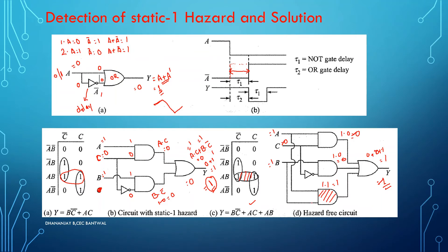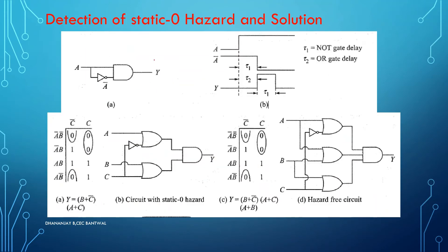Static 0 hazard: your circuit should be giving output 0, but your output is becoming 1. This condition prevails in a circuit of the kind A·A-bar. If you give input 1, this should have been 0. You are expecting output 0. But due to the NOT gate time delay, it will not become 0, it will remain 1. So 1·1 = 1. Instead of being 0 it becomes 1. This is called static 0 hazard.